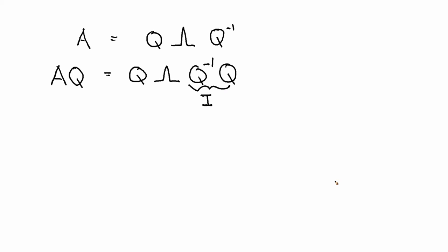Now what's the identity matrix times another matrix? It's the same matrix, right? So if I take the identity matrix times lambda, it's just lambda. Then I have the simplified equation as AQ equals Q lambda, right?